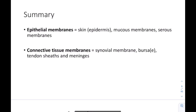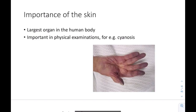In summary about membranes: we have epithelial membranes like the skin, specifically the epidermis layer; mucous membranes like the oral cavity and nose; and serous membranes like the covering and lining of the lungs, called the pleura. Connective tissue membranes include synovial membranes lining the joints, the bursa which are fluid-filled sacs, tendon sheaths which wrap around tendons, and the meninges which cover the CNS — the brain and spinal cord. The skin is the largest organ in the human body.